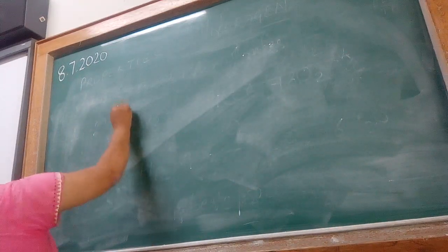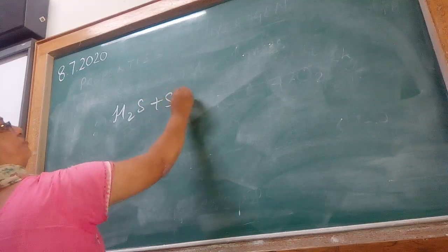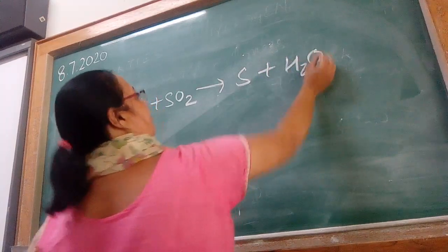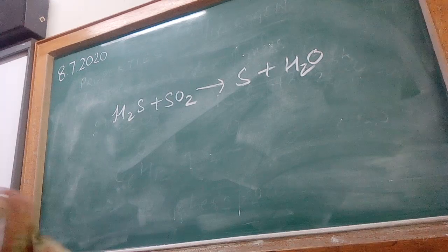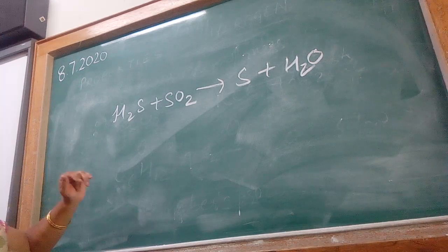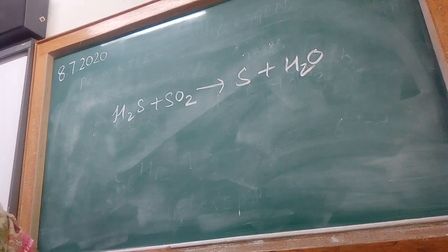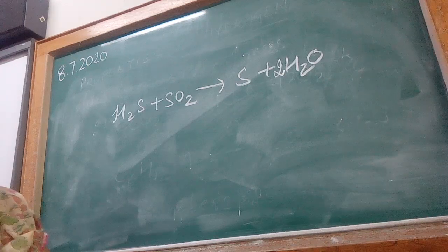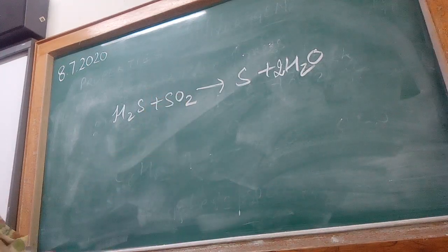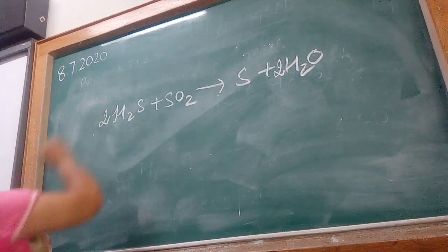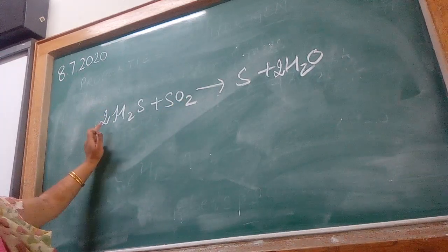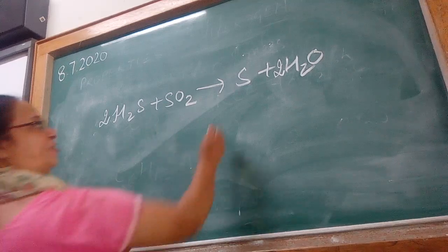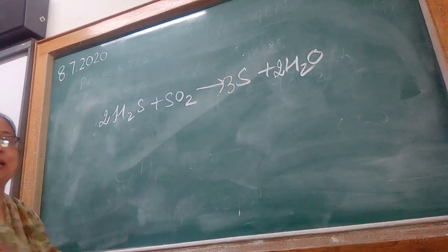The next equation is hydrogen sulfide plus sulfur dioxide, and the products are sulfur plus water. First, we see oxygen is not balanced, so let's start with oxygen — making it 2 oxygen. Then for hydrogen, we get 4 hydrogen, so hydrogen becomes 4. Finally, we have 2 sulfur on one side and 1 sulfur on the other, giving 3 sulfur total. This equation is now balanced by the hit and trial method.